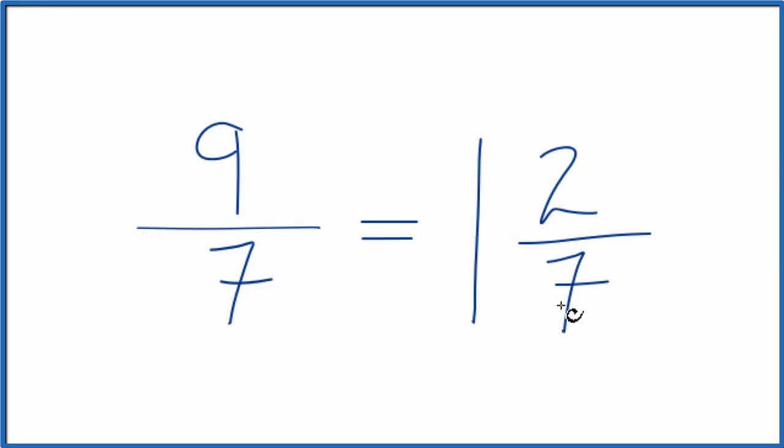You can check that. 1 times 7, that's 7 plus 2. That's our 9. And the denominator, that stays the same.